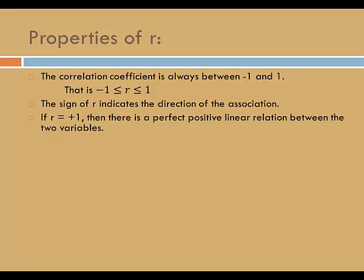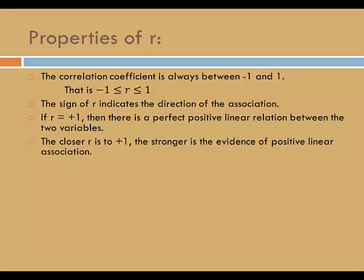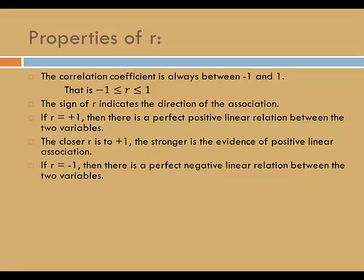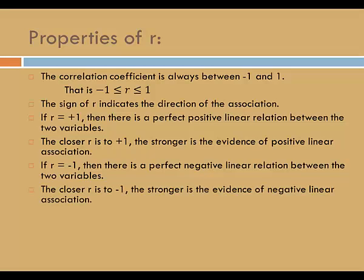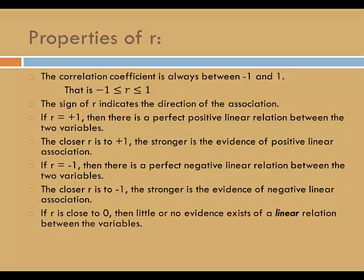If the correlation coefficient is plus 1, then there is a perfect positive linear relation between the two variables. The closer R is to positive 1, the stronger is the evidence of positive linear association. If R is negative 1, then there is a perfect negative linear relation between the two variables. If R is close to 0, then little or no evidence exists of a linear relation between the two variables.